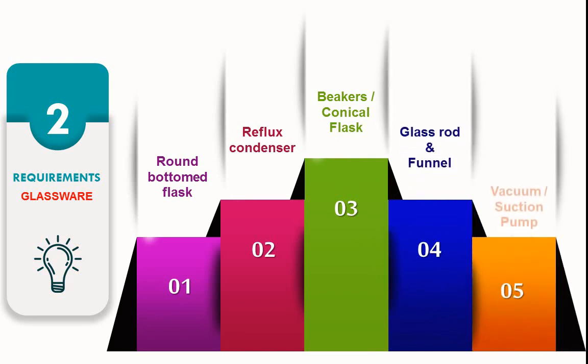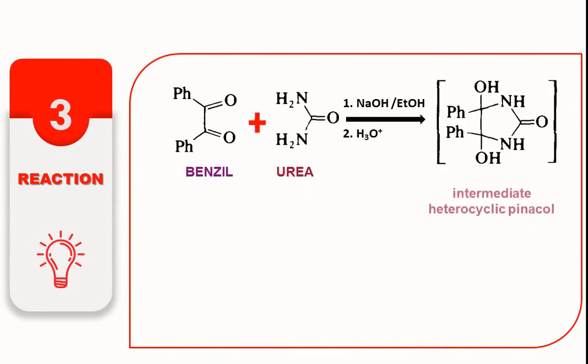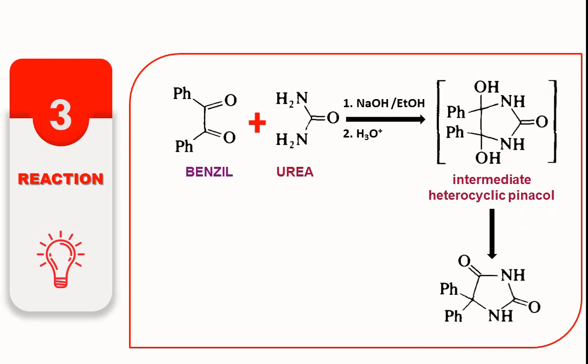Let's see the reaction. Benzil when reacts with urea in presence of NaOH and ethanol forms the intermediate heterocyclic pinacol, which forms phenytoin, also called hydantoin or 5,5-diphenyl hydantoin.